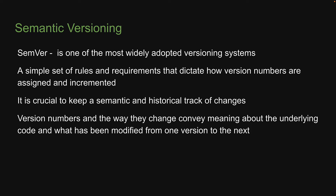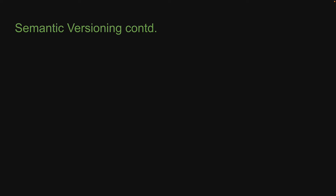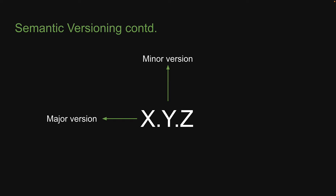In doing so, it becomes easy to communicate your intentions to the users of your software. A semantic version is of the format x.y.z, where x stands for a major version, y stands for a minor version, and z stands for a patch. For example, uppercase version 2.0.2 indicates a major version of 2, a minor version of 0, and a patch version of 2.